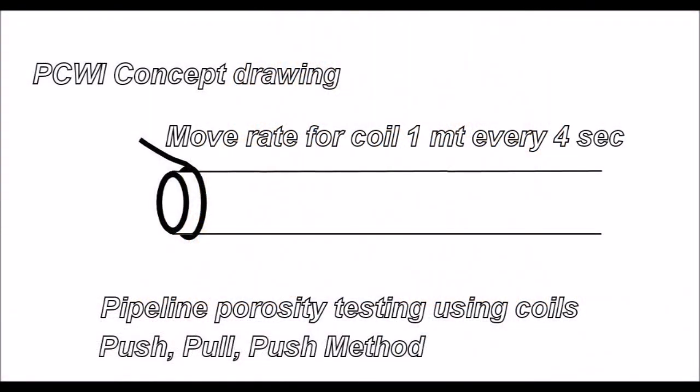Now here we have some concept drawings. This is how I'd like to see a coil used during testing. You move at the rate of 1m every 4 seconds. Using coils that have gaps and don't sit all that well on the surface at times. The idea is that you push so far forward, you pull back, and then you push further forward again. And you continue doing this along the way.